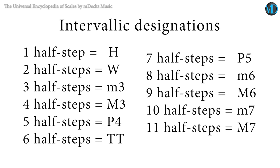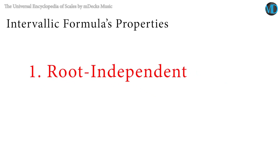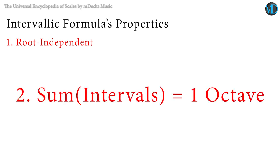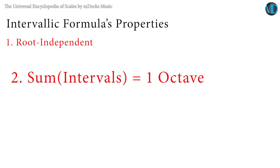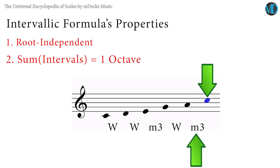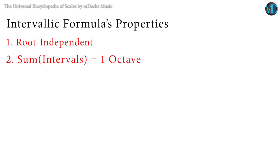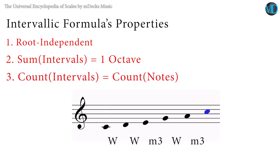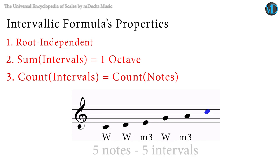Now we can guarantee that every scale has one and only one possible intervallic formula. The first interesting property of the intervallic formula is that it is root independent — it doesn't matter if we're talking about the C major pentatonic, the D major pentatonic, or the G major pentatonic; they all share the same intervallic formula. Another property is that the intervals always add up to exactly one octave or 12 half steps, and we always close the intervallic formula showing the distance from the last note to the first an octave higher. The amount of intervals is identical to the amount of notes, since every note is accompanied by an interval to the next note.